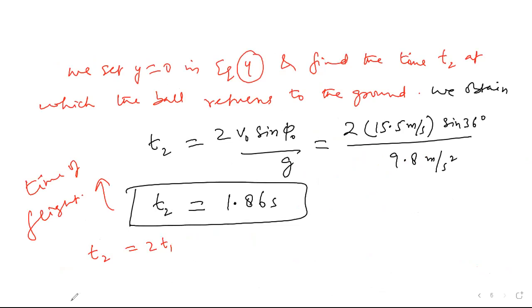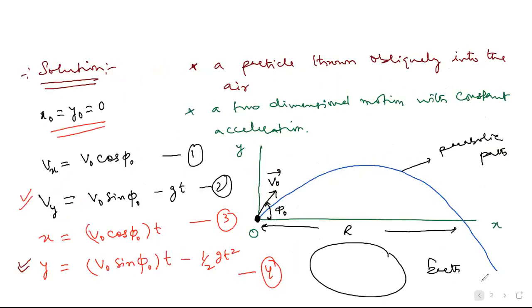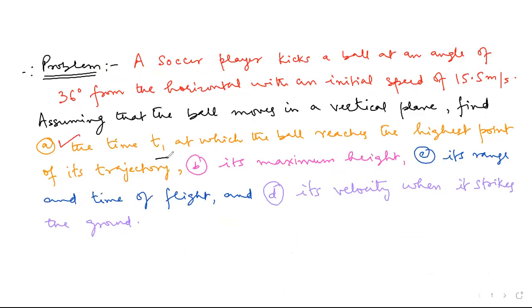This must occur because the same time is required for the ball to go up and reach its maximum height from the ground as it takes to come down from maximum height to ground. So we have completed three parts: time of ascent, maximum height, range, and time of flight. Now we have to solve for the velocity when the ball strikes the ground.